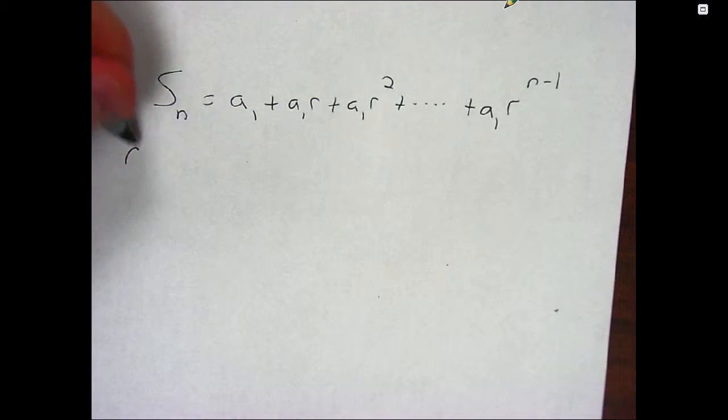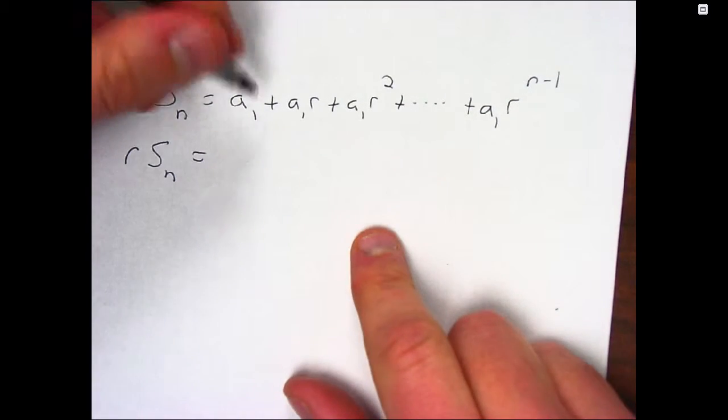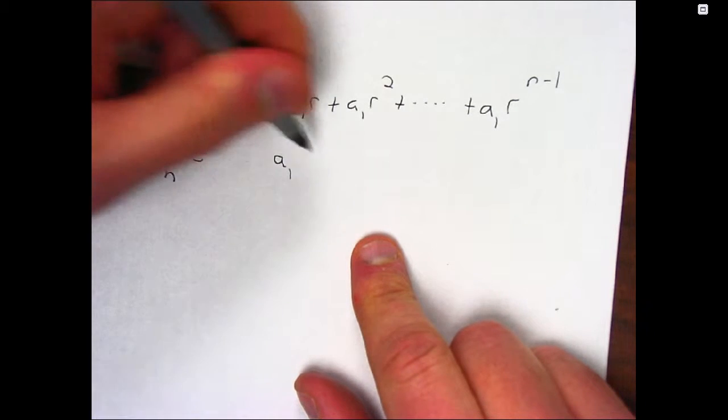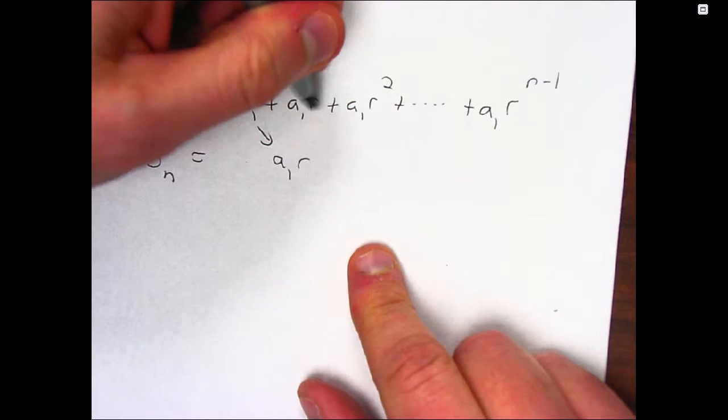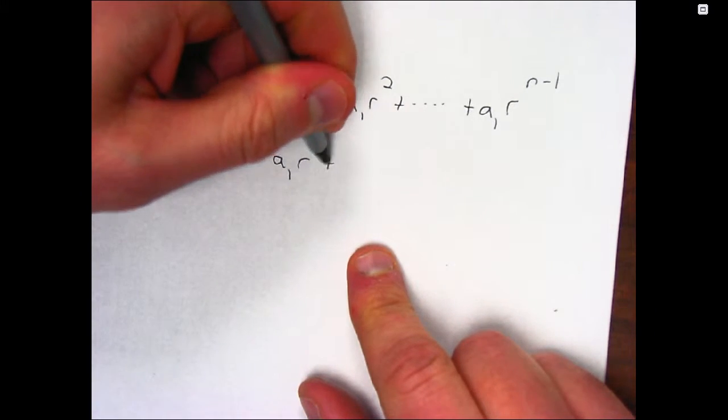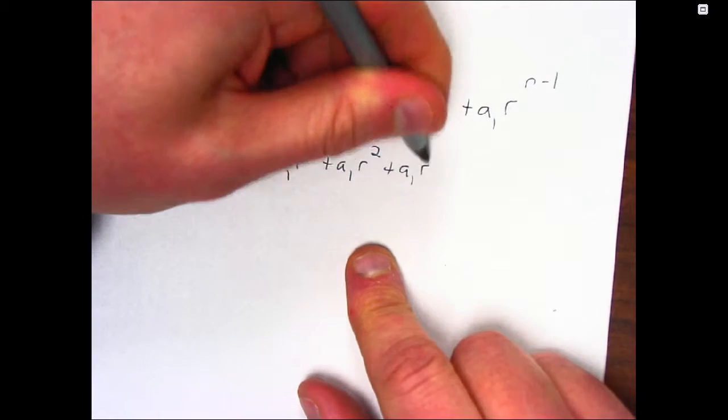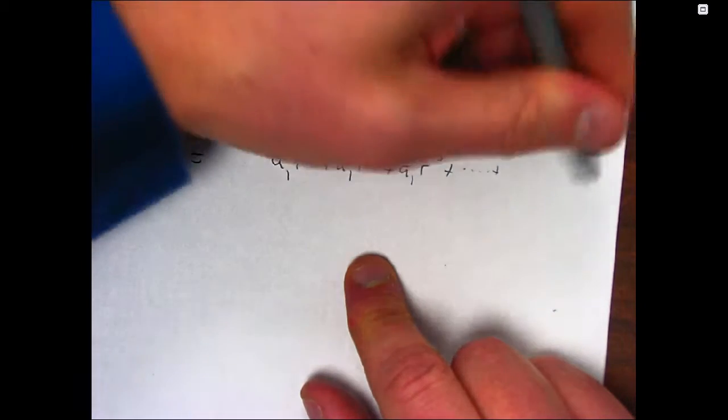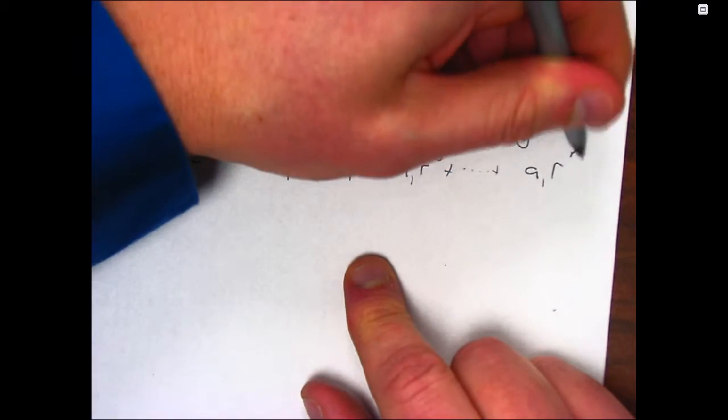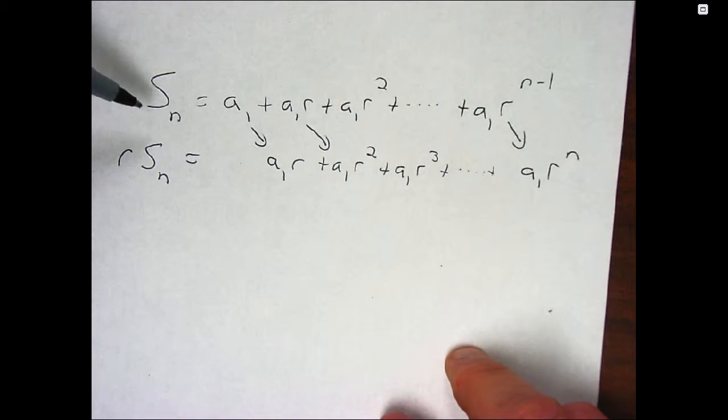Everything's going to get an extra r now. So a sub 1 is going to have an r by it. So this is going to get multiplied and end up over here. A sub 1 times r will now be a sub 1 times r squared, right? That goes over there. And so on. And so we end up with all these. And then this one now does have an exponent of n, right? So everything I multiplied by r, the power of r went up by 1 each time.